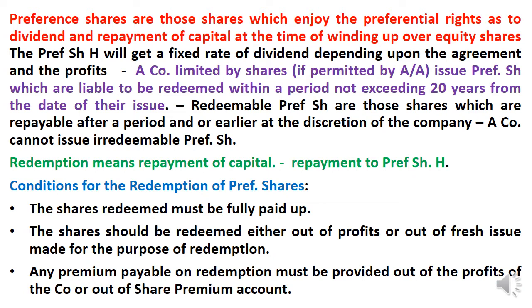This is very simple. Preference shareholders — for example, 10% Preference Shares — have two preferences: one is to get the dividend in advance, earlier than equity shares; and similarly, to get the repayment amount at the time of winding up. Preference shareholders will get a fixed rate of dividends based on the type of Preference Shares.